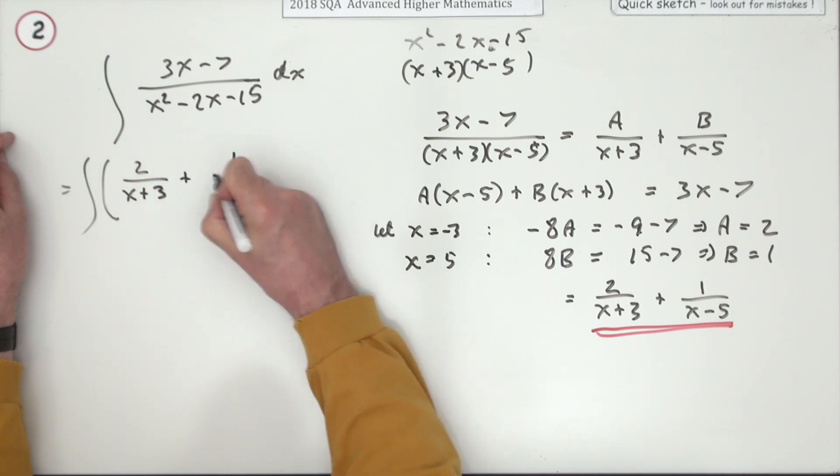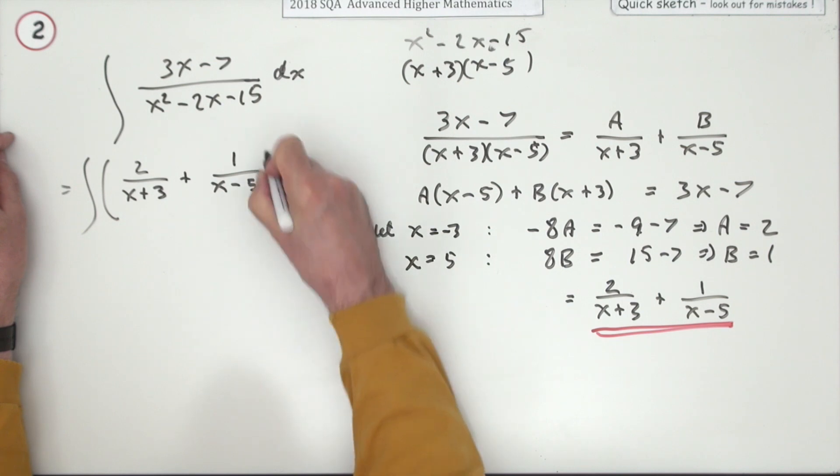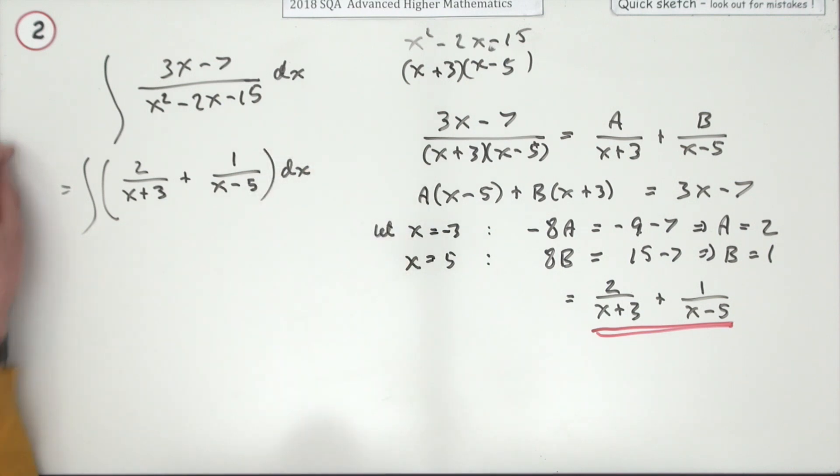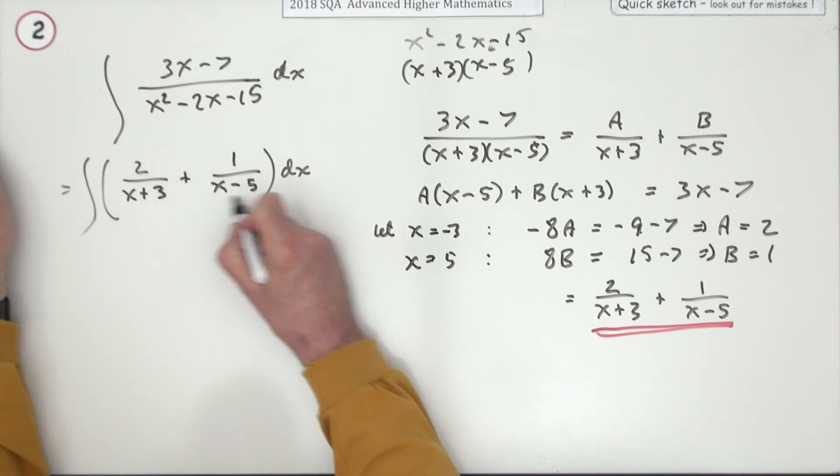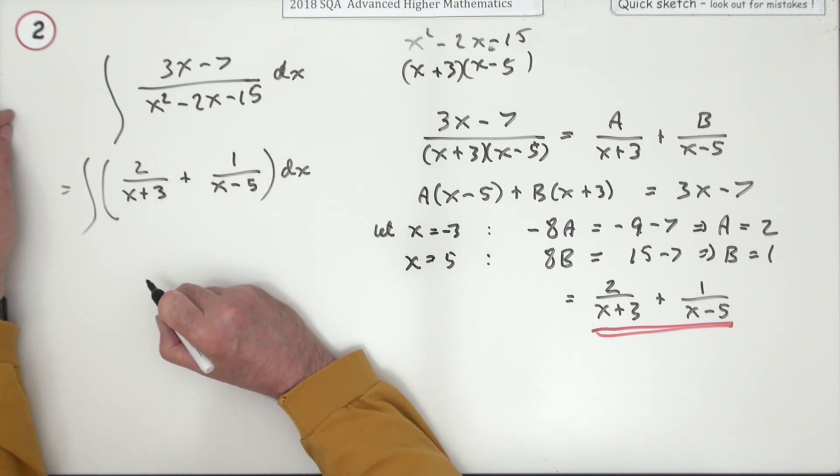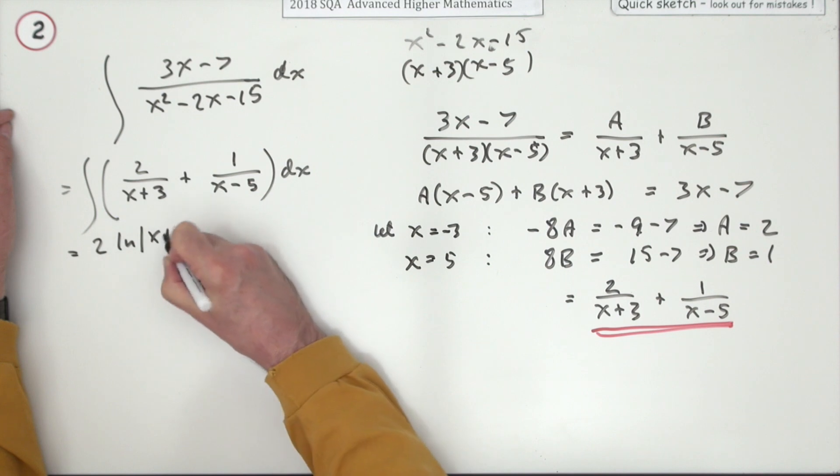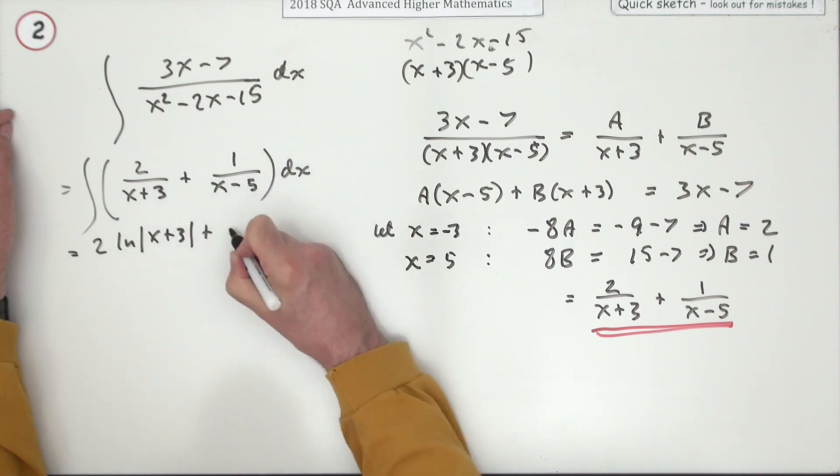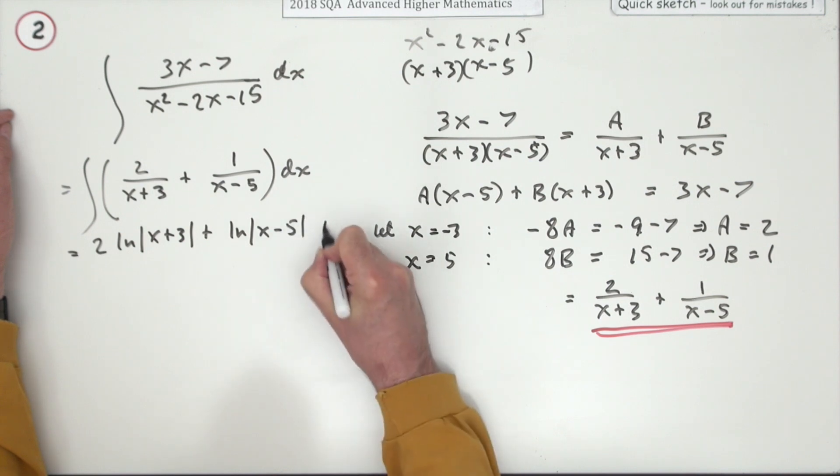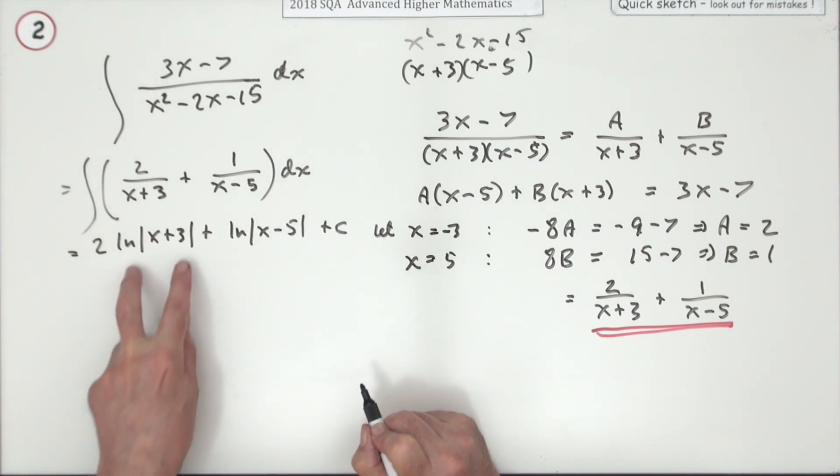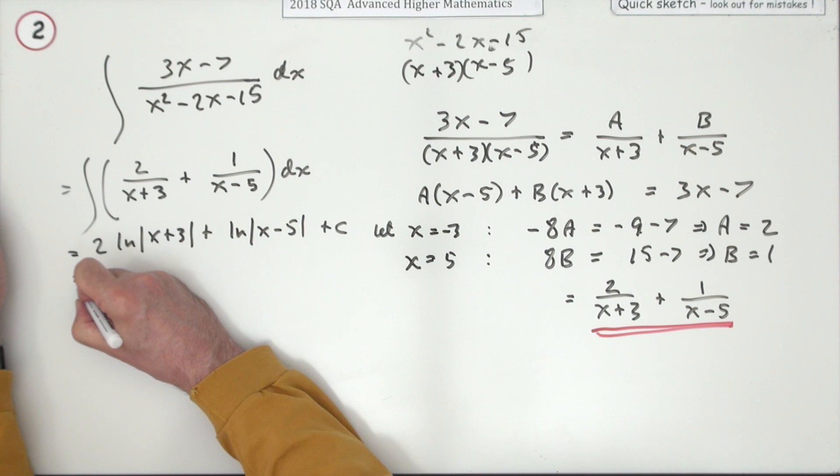And they're just linear denominators - they pop back to logs. So the first one will be 2 ln(x + 3) and that's just 1 ln(x - 5), and then of course plus C. Put them inside the wee safety blankets there because the log is quite a fussy wee creature.